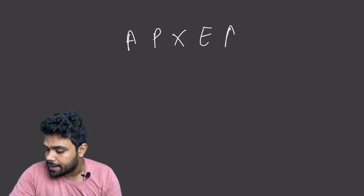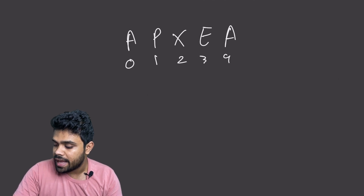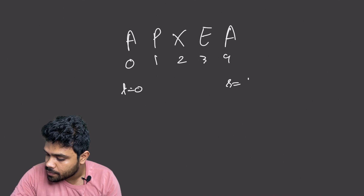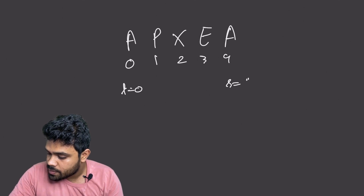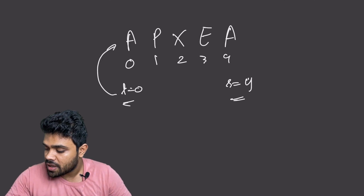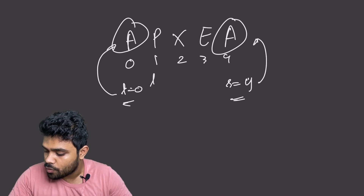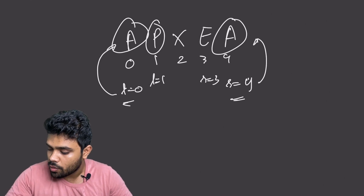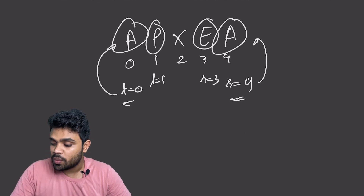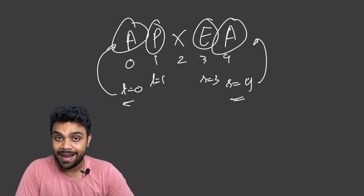Now let's take an example of a non-palindrome: A, P, X, E, A — indices 0, 1, 2, 3, 4. L is pointing to index 0 (A), R is pointing to index 4 (A). They are equal, so we move L to 1 and R to 3. Now L is pointing to P and R is pointing to E — they are not equal. Hence, we return false. It is not a palindrome.